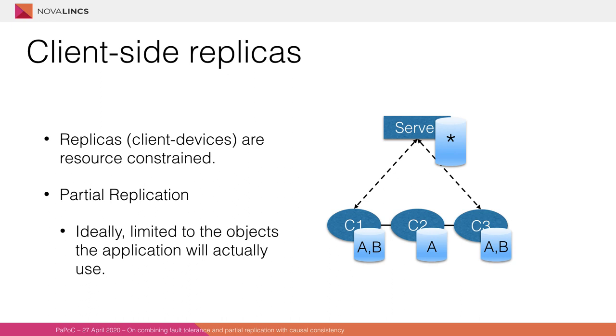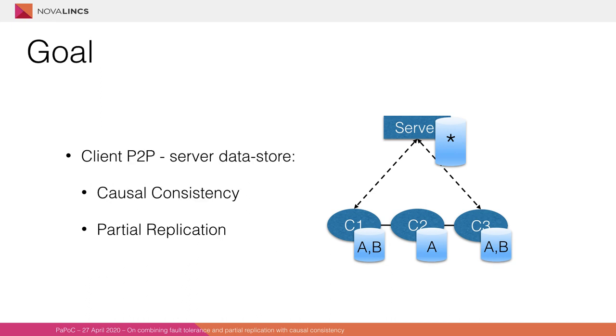Ideally, such a replication mechanism does limit the objects every client has to replicate to the objects that the application instance is actually interested in. For example, if client1 is interested in objects A and B, it doesn't store the whole database, but it stores only objects A and B. Now this leads us to our goal. We'd like to have a data store where clients are replicas of the data which can communicate directly among each other, while also communicating with the server to ensure durability. The consistency model would be causal consistency and we'd like to have partial replication at the clients.